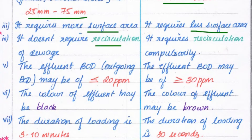The slow rate trickling filter does not require recirculation of sewage, but the fast rate trickling filter requires recirculation capacity. The effluent BOD in the slow rate trickling filter may be less than 20 ppm, but the effluent BOD may be more than 30 ppm in the fast rate trickling filter.